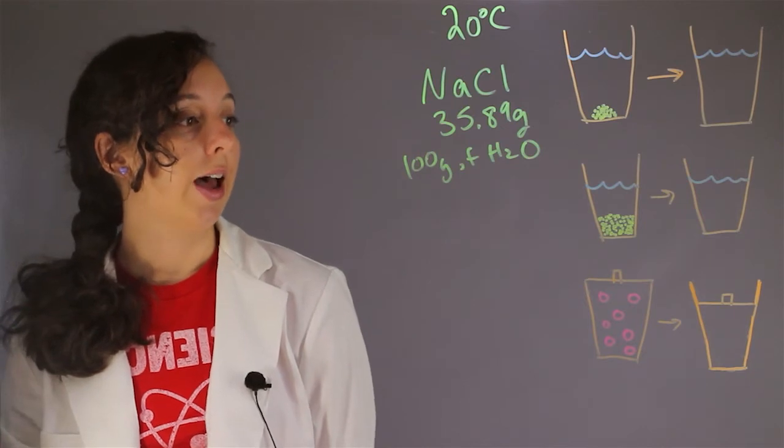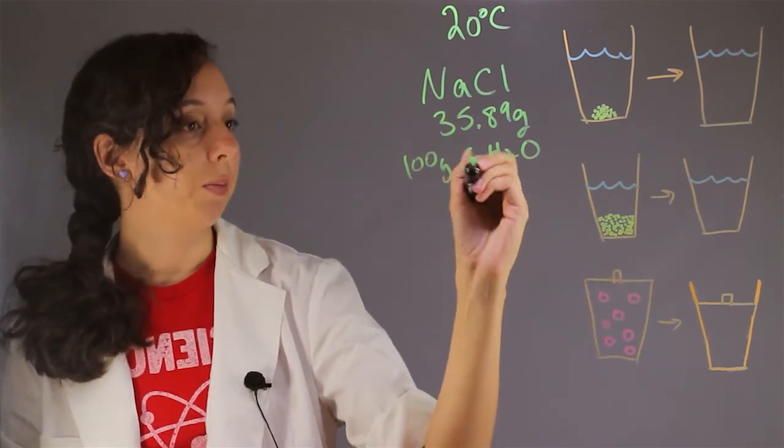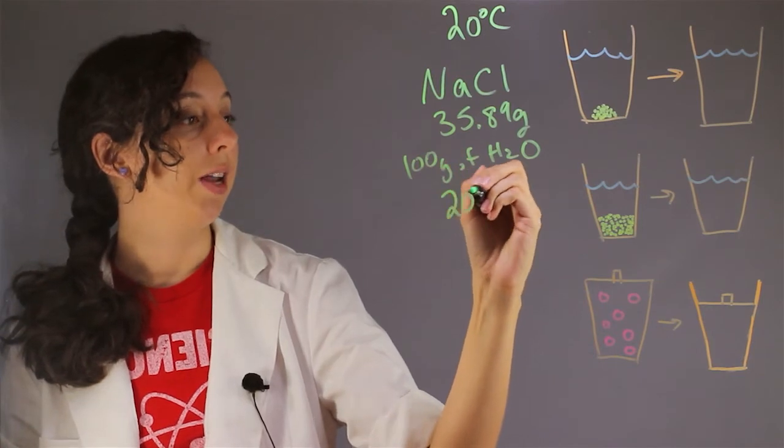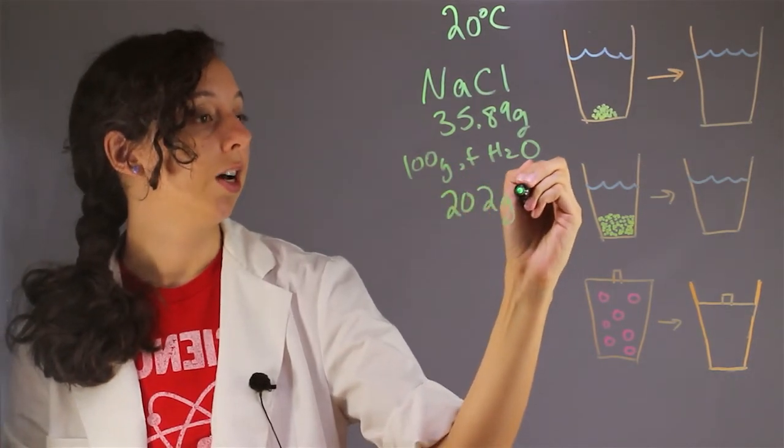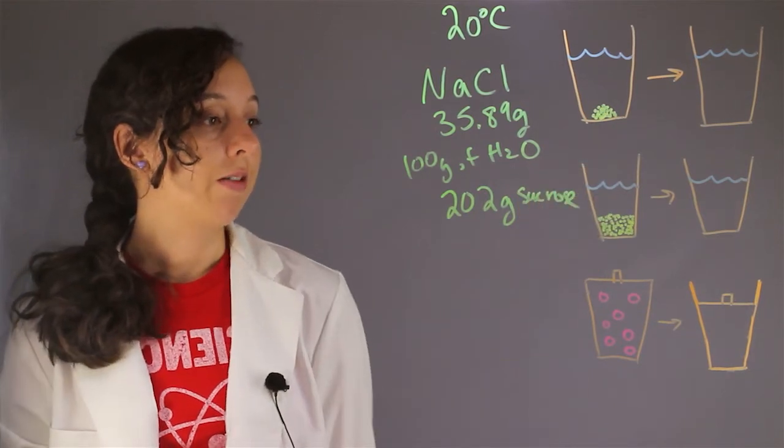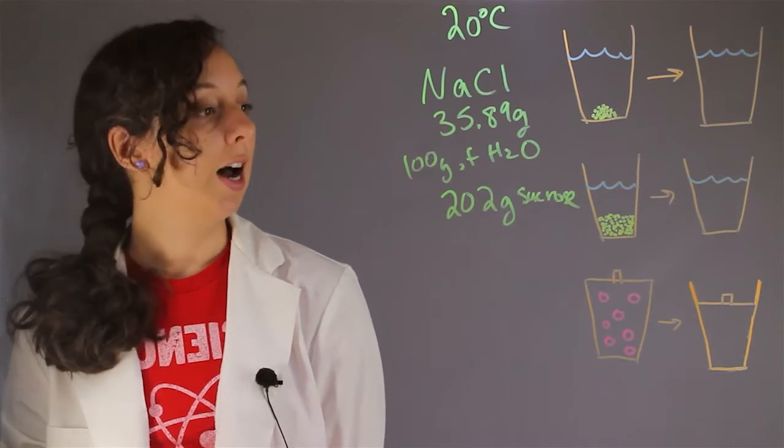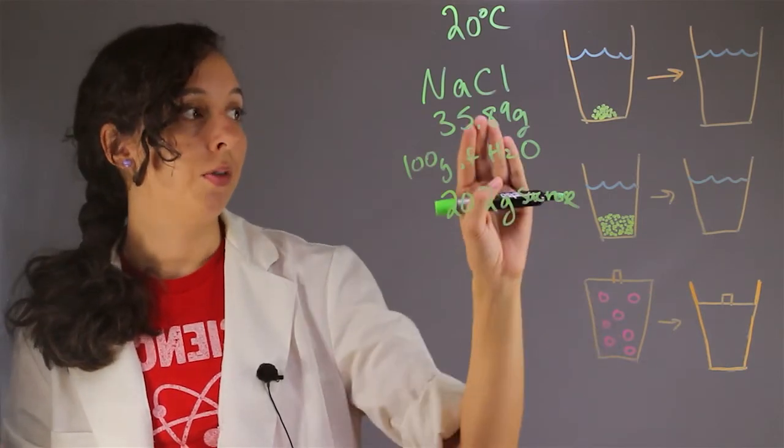Sucrose has a lot more solubility in water. For every 100 grams of water, you can actually put in 202 grams of sucrose. This is why we can get so much sugar into things like sodas and other drinks. It's a lot more soluble than salt.